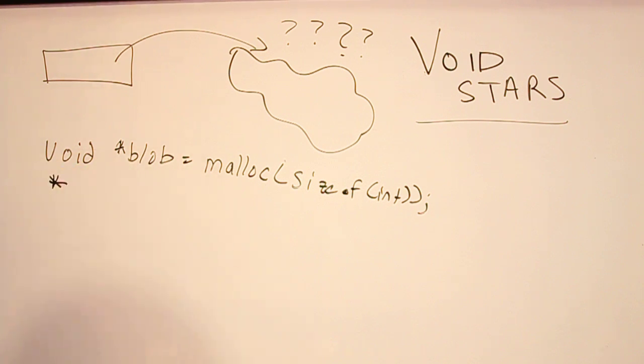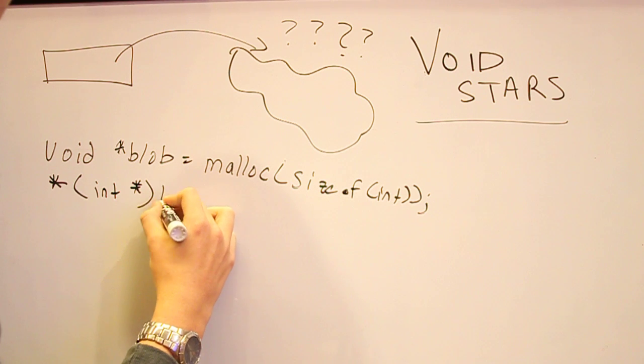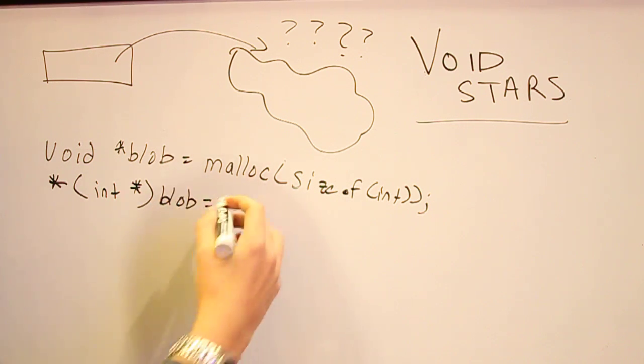But, the thing about dereferencing a void star is that when you dereference this blob, you just take off the star, and then you just have a void. Now, C has no idea what a void is. So, we have to tell it. So, we say, hey C, blob is actually an int star. And then you say blob, and let's give it a value like six.